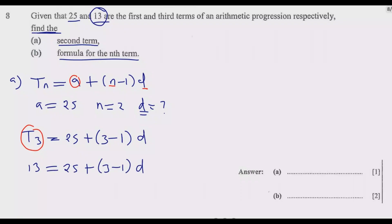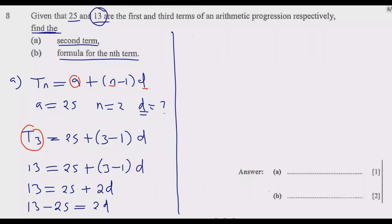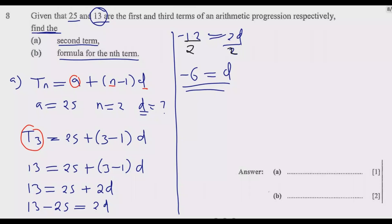Solving for d: 13 = 25 + 2d. Rearranging, we get negative 12 = 2d, because 13 is less than 25. Dividing both sides by 2 gives d = negative 6. So now we know that d is −6.